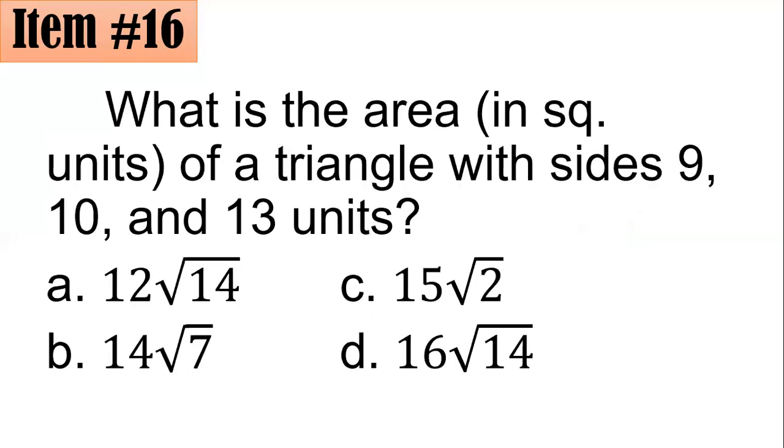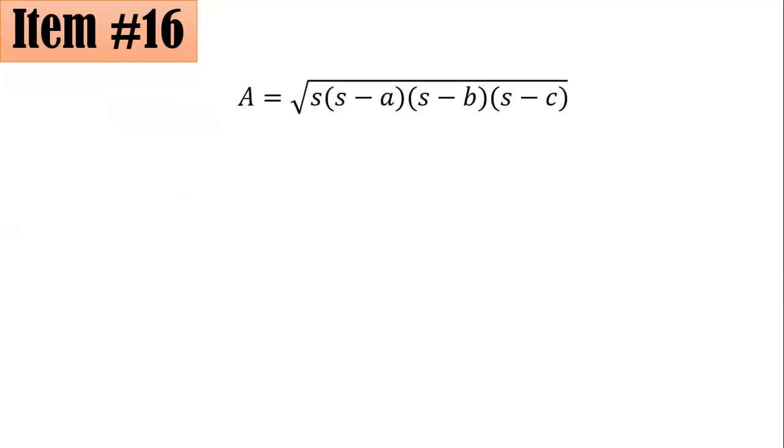16. What is the area in square units of a triangle with sides 9, 10, and 13 units? Did you go for 12 square root of 14, 14 square root of 7, 15 square root of 2, or 16 square root of 14? I believe you would agree with me that this triangle is not a right triangle. So in doing such, I suggest that you use what we call Heron's formula, which takes the form A is equal to the square root of S times S minus A times S minus B times S minus C, where A, B, and C here are the sides of a triangle that exists.